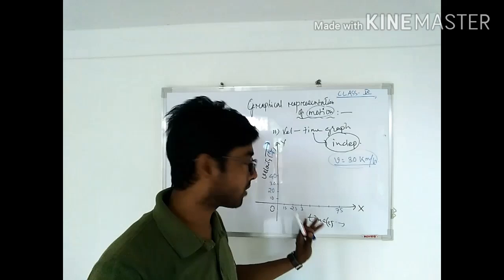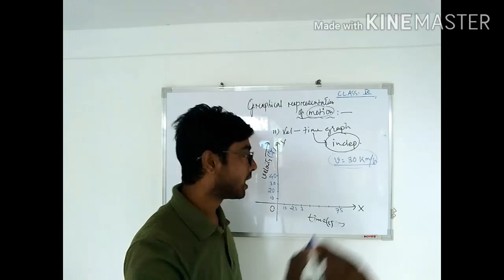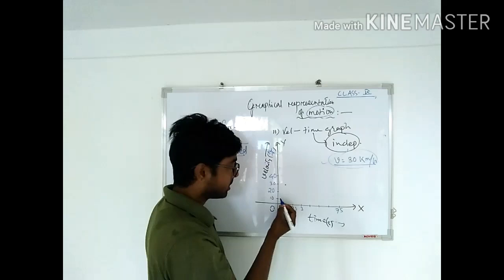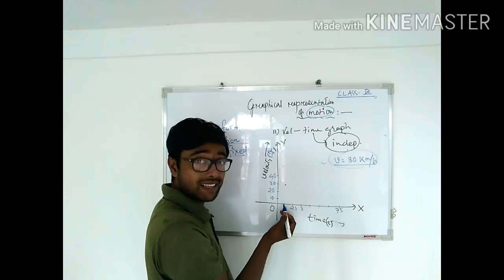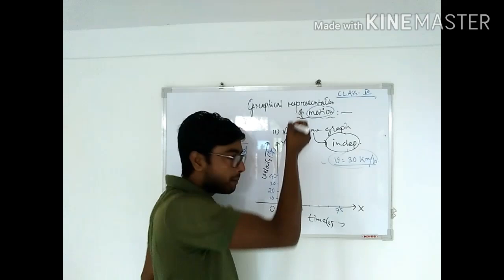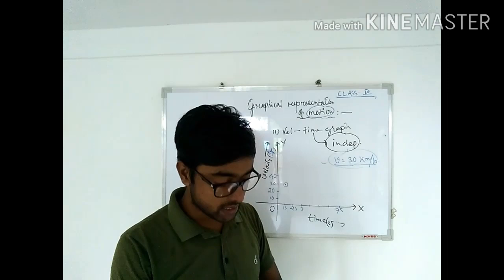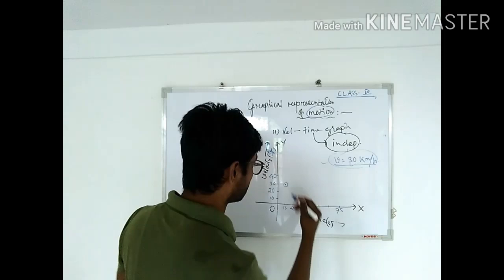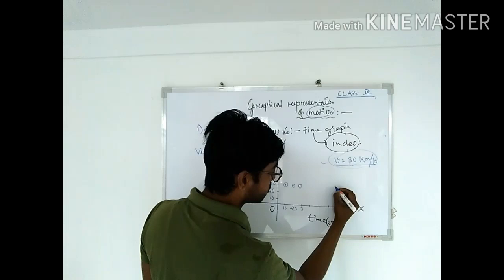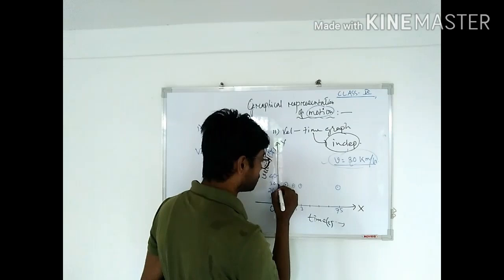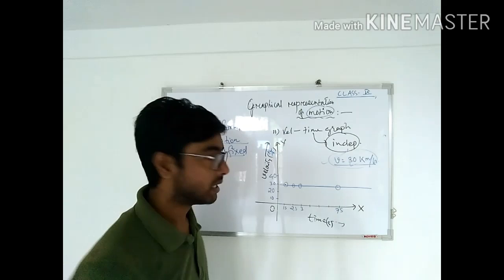After one second, velocity is 30. The point will be at (1 second, 30 km/h). After two seconds, it will also be 30 — because it is in uniform motion, its velocity will not change. After three seconds it will be 30, after seven seconds also it will be 30 km/h. So all points lie at the same velocity value.